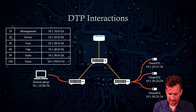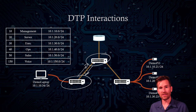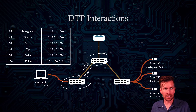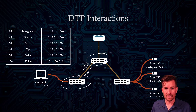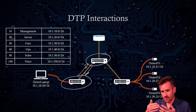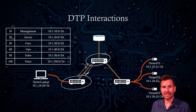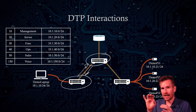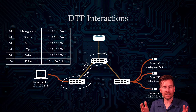What happens is the switches chat back and forth using this protocol, each saying what it would like to do. If they're in agreement — both access ports or both trunk ports — they can talk. If one is a trunk port and the other is one of the dynamic settings, they can still talk. The interplay between the two devices involves them negotiating the kind of connection, but depending on what settings are on each side, there are going to be some different interactions.